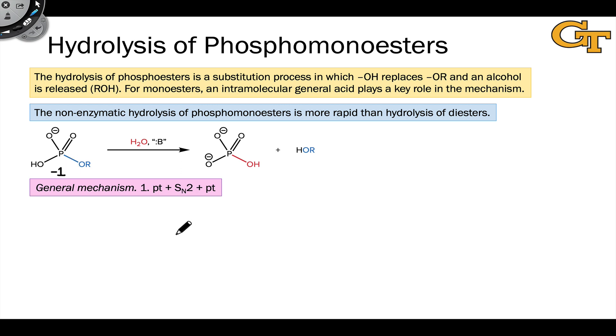In looking at hydrolysis reactions in solution with just the phosphomonoester dissolved in water, what we find experimentally is that phosphomonoesters hydrolyze more rapidly than the corresponding diesters. The reason for this mechanistically has to do with the fact that the monoester retains a hydroxyl group, and this is a group that can play a key role as an intramolecular general acid during the hydrolysis process.